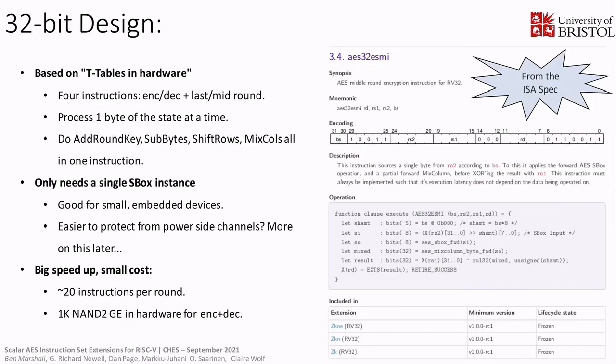For the 32-bit design, the way we like to explain it is: it's based on t-tables in hardware. If you imagine implementing AES in software with a t-table style, you have essentially a one-byte input producing a 32-bit output, but normally you'd do this by looking up into memory. In this case, we roll up that entire operation into a single instruction — each instruction does one byte of s-box, some of the ShiftRows, and one byte's worth of MixColumns, then you XOR that result back into the state, just like a normal t-table operation. The advantage is that you only need to instantiate one s-box in hardware, and despite years of research on efficient s-boxes, they remain the bottleneck.